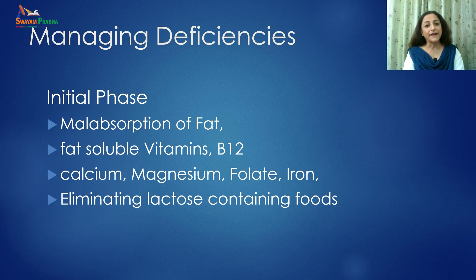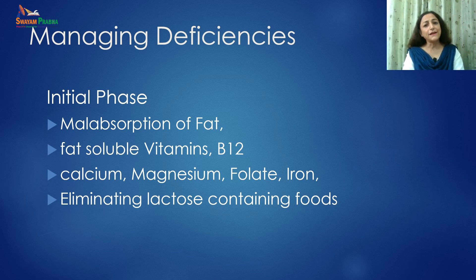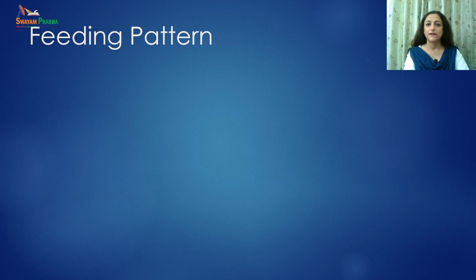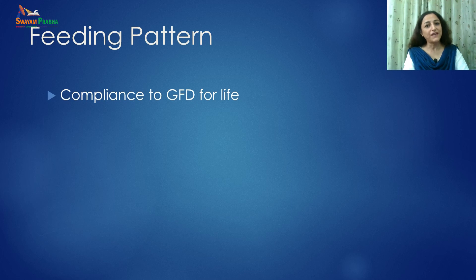We need to manage dietary deficiencies because in the initial phase of the disease, there could be malabsorption of fat, and less absorption of fat-soluble vitamins, B12, calcium, magnesium, folate and iron. Supplementation can be helpful until the intestinal mucosa has recovered. In cases where the person is experiencing nausea, vomiting or diarrhea, eliminating lactose-containing foods can benefit the person and help in early recovery. Compliance to a gluten-free diet for life is a must, even after symptoms have faded and TTG antibody levels have returned to normal.